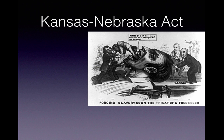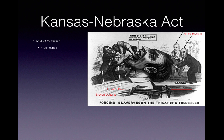This famous political cartoon responds to the Kansas-Nebraska Act. There are four Democrats: Stephen Douglas is shoving a Black man down the throat of a Free Soiler with the help of Franklin Pierce. The Free Soiler is held down by James Buchanan and Lewis Cass. All four were Democrats, and a slave is being forced down the throat of someone who opposed the expansion of slavery westward.